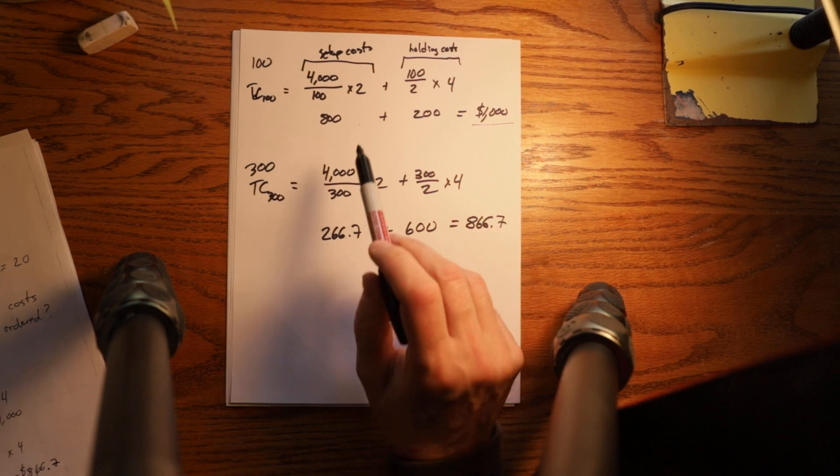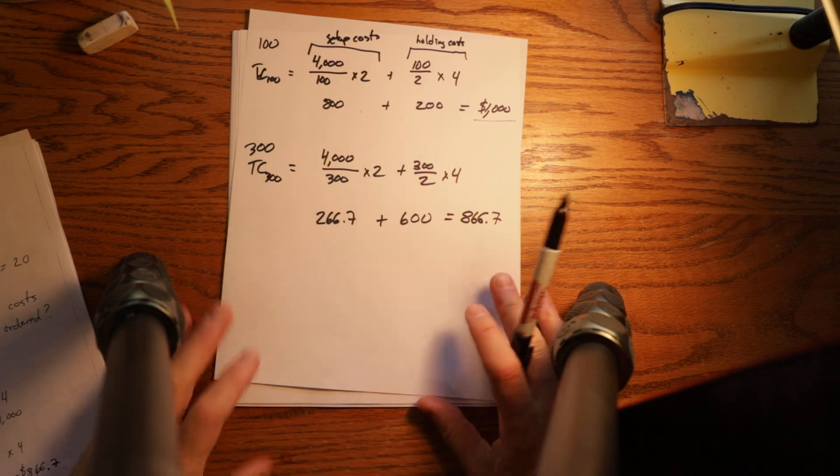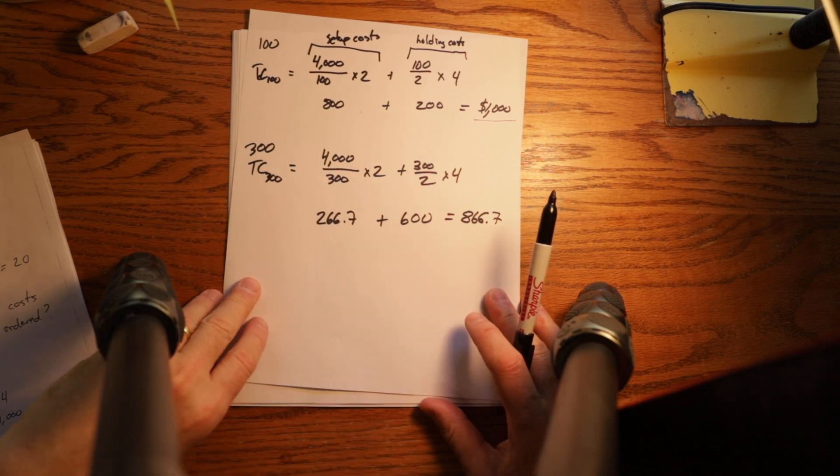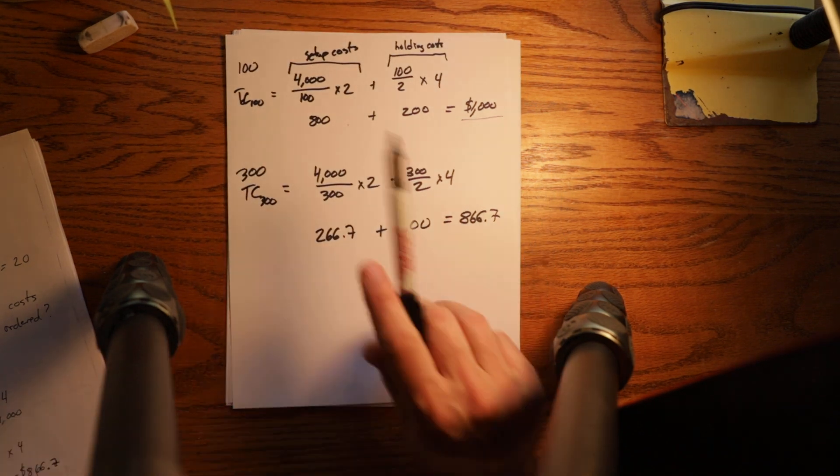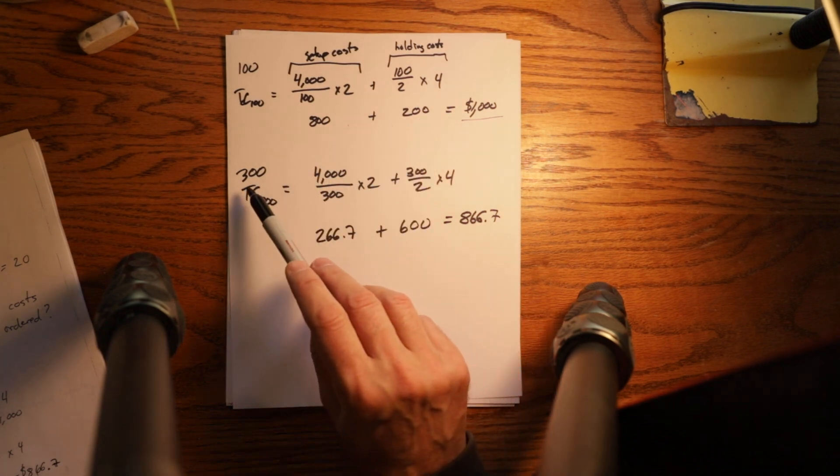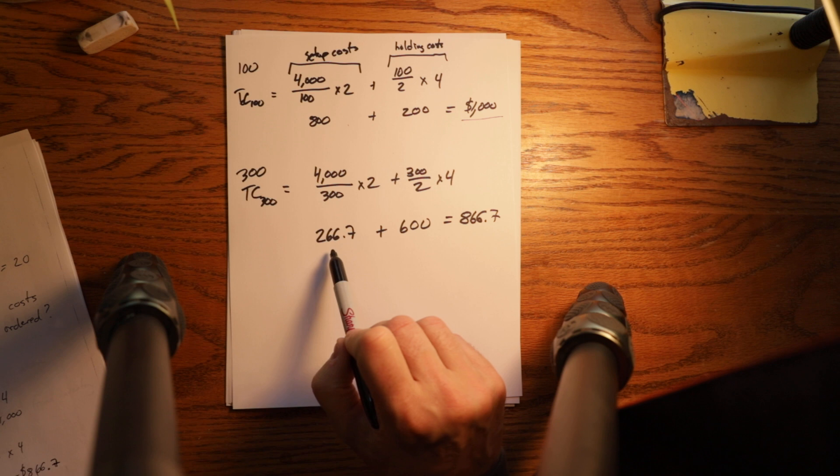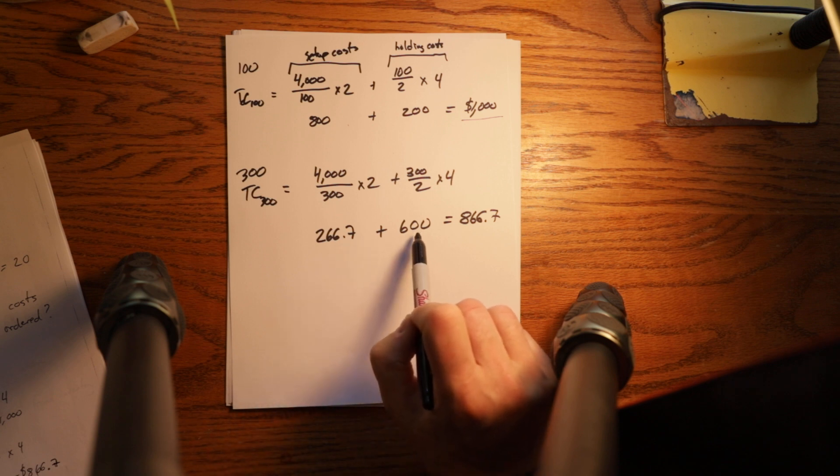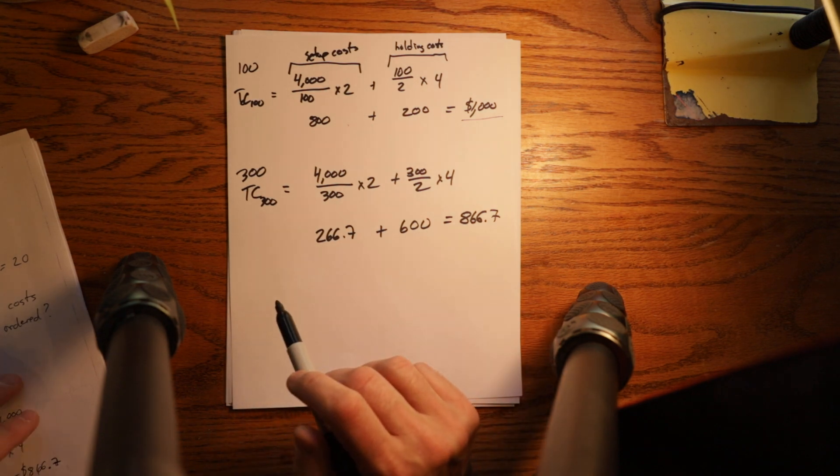So if you order a quantity below, total costs go up, setup costs get higher, holding costs go down. If you order a quantity above your economic order quantity, setup costs go down, holding costs go up, and overall costs go up.